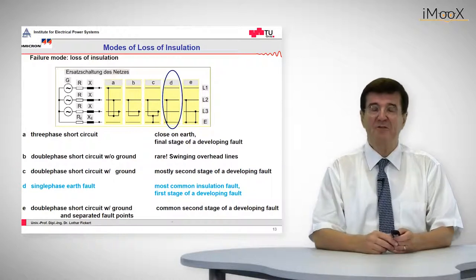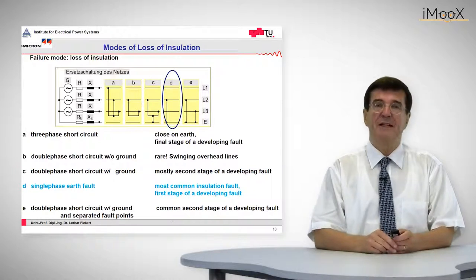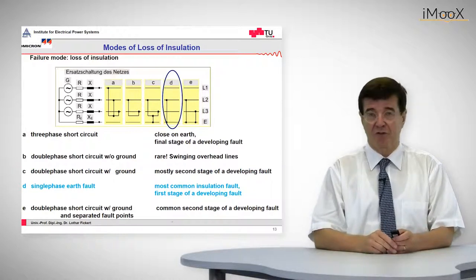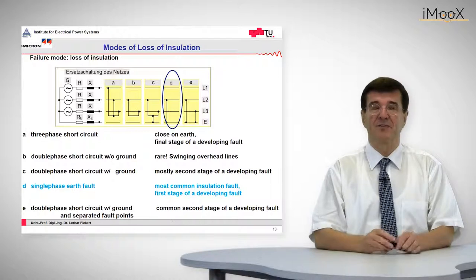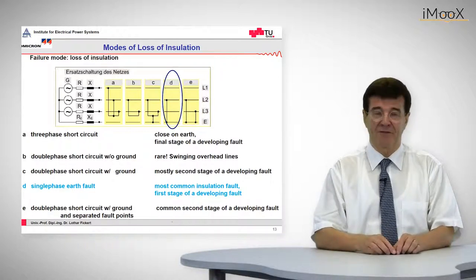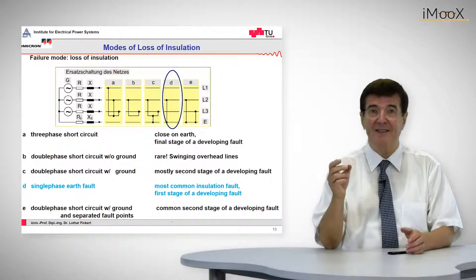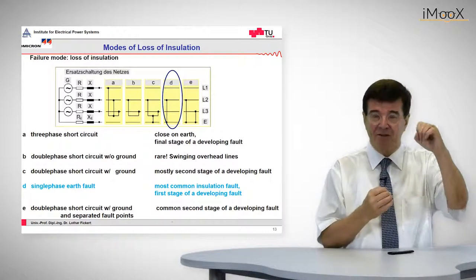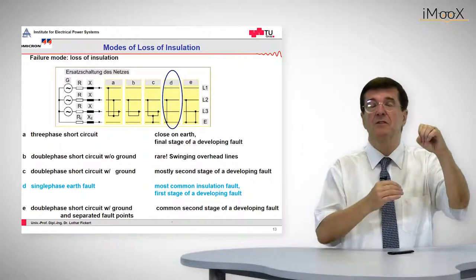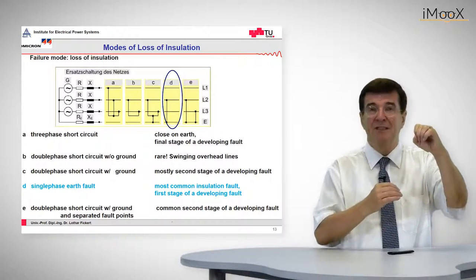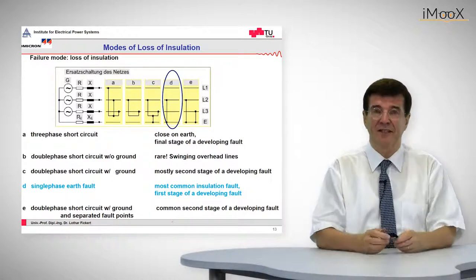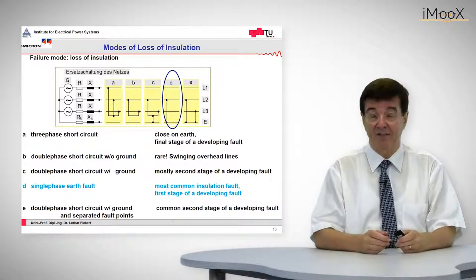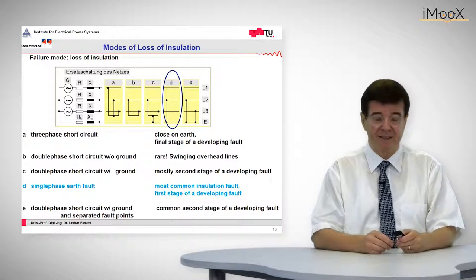The single-phase to ground fault, as I mentioned before, is the most common one because it is caused by the breakdown of insulation. Breakdown of insulation means we have a field between the hot conductor and the cold ground, and if this insulation does not sustain this field anymore, then we have an insulation breakdown — a fault between phase and ground.